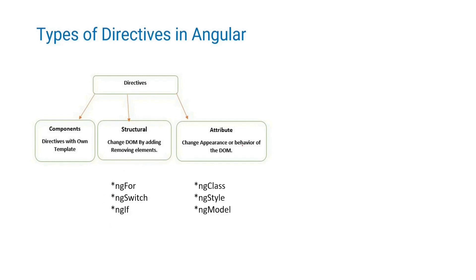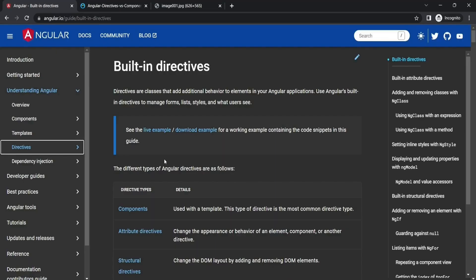Attribute directives are characterized by their ability to change the appearance or behavior of the DOM — adding classes to any element on the fly, adding styles, or adding data binding to any element. Those are the cases for attribute directives.